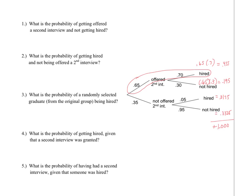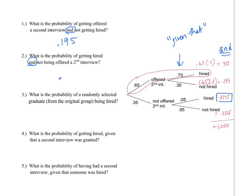Question one asks: what is the probability of getting offered a second interview and not getting hired? Since this is an AND statement, we follow the branches to find the product. The answers at the end of the branches are the products representing AND probabilities, while the middle-tier values are the given-that probabilities. Getting offered a second interview and not getting hired is represented by 0.195. Question two: the probability of getting hired and not being offered a second interview is 0.0175.